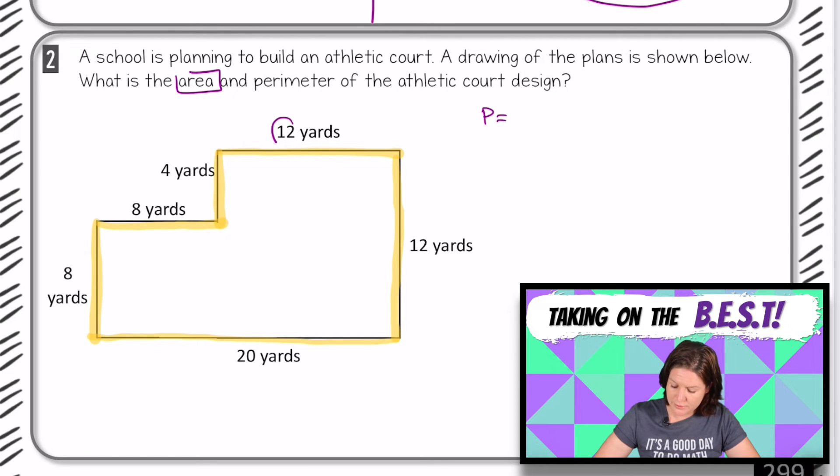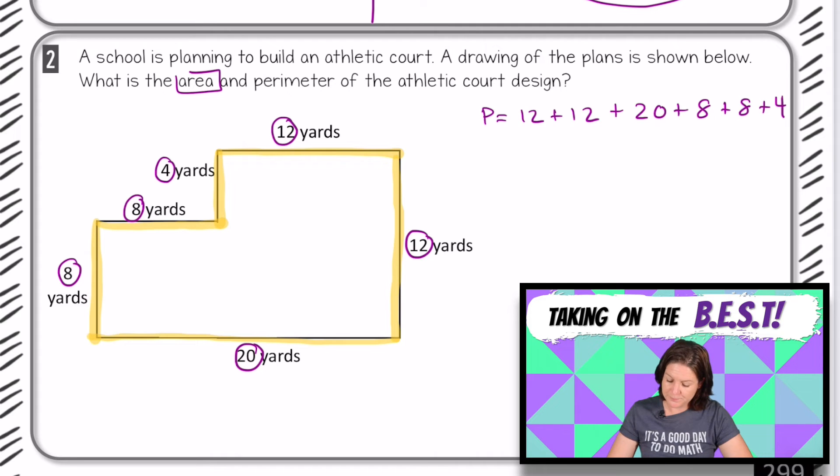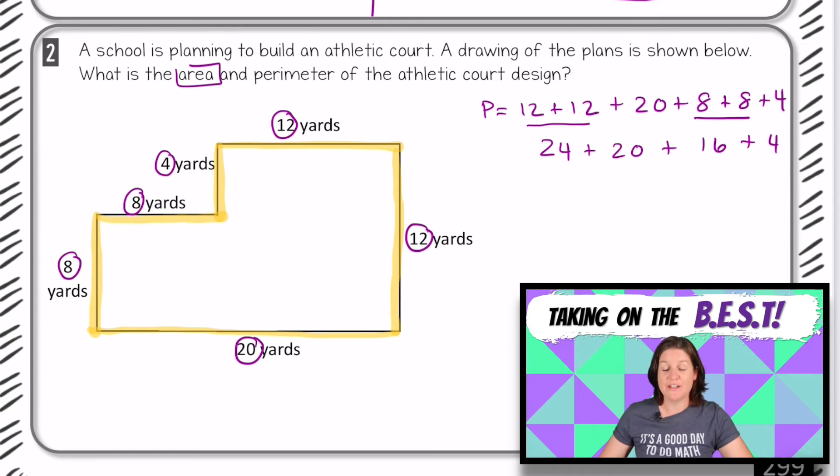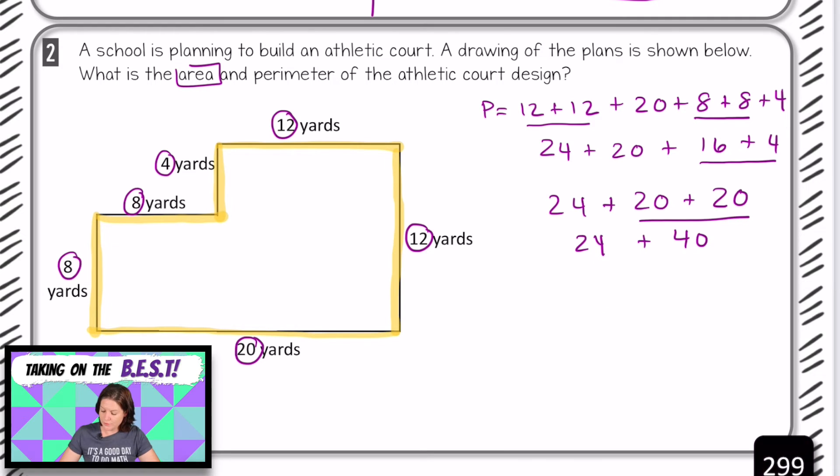So the perimeter equals 12, plus 12, plus 20, plus 8, plus 8 yards, plus 4 yards. Okay, so now we need to add those up. So we have 12 plus 12 is 24, plus 20. We can say 8 and 8 is 16, and then we'll bring down the plus 4. I see that I could do 16 and 4. That would equal 20, plus 20. So right here, 20 plus 20 would be 40, plus 24. So our perimeter is 64 yards.